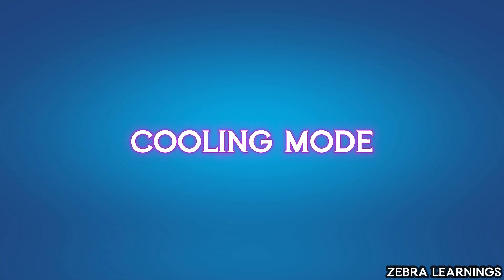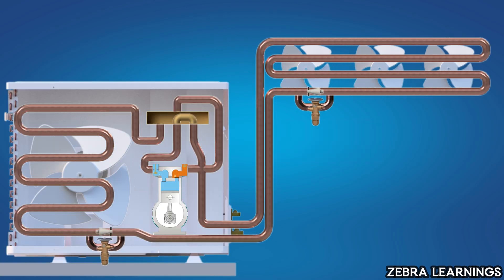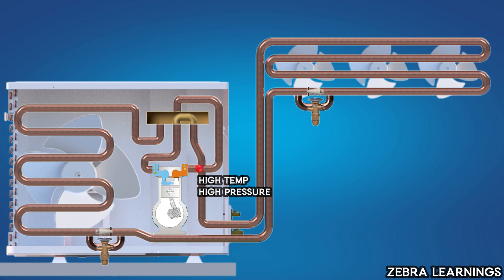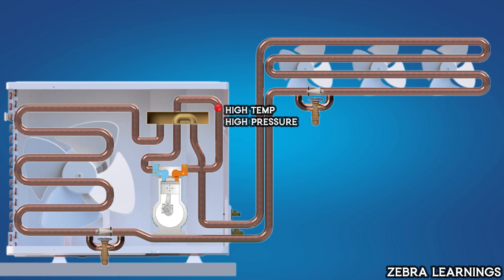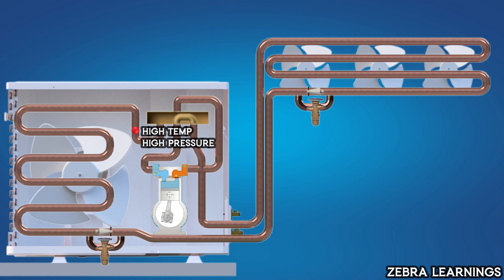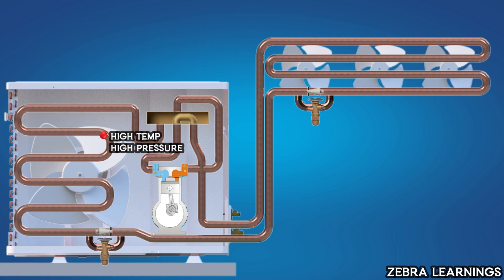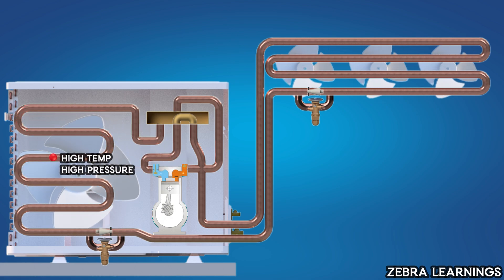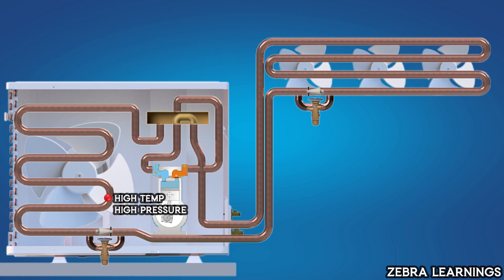Cooling Mode. First, let's see how the system works in cooling mode. The refrigerant, at high temperature, exits the compressor and enters the reversing valve. From there, it flows to the outdoor unit.